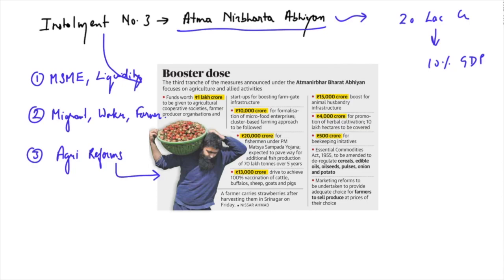In part one, measures for the MSME sector as well as liquidity boosting measures were announced. In part two, relief measures for migrants, workers and farmers were announced, which included their housing needs, credit needs and food needs. Right now today in part number three, agricultural reforms are being suggested.